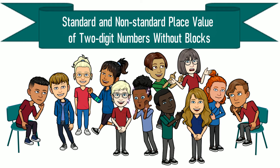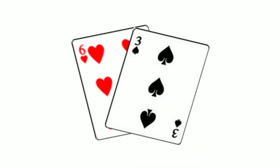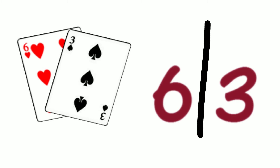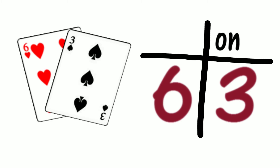Let's investigate how we can describe two-digit numbers using standard and non-standard place value without blocks. Let's select cards to make a two-digit number. What number did we make? Did we make 63? Let's record 63 in a place value chart.